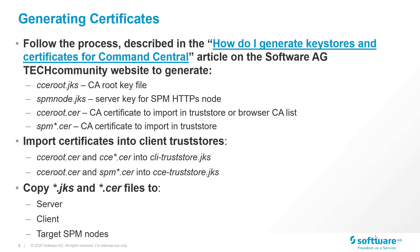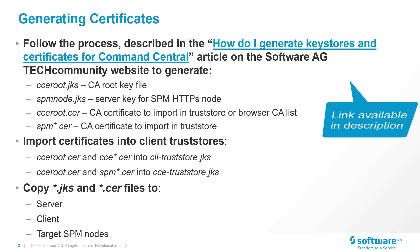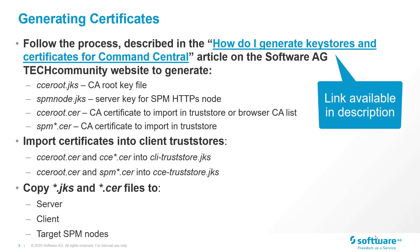Now let's go over the first step in more detail. To generate custom certificates we need to use a key generation tool. This article shows you how to generate custom certificates with the Java key tool, though of course you can use a different tool. When you're done you should have a root certificate JKS file, a platform manager JKS file, a Command Central .cer file that you can import into the browser, and the certificate for each platform manager node that Command Central manages. After you have generated the certificates you should import them into the trust store for the CLI and the Command Central server itself.